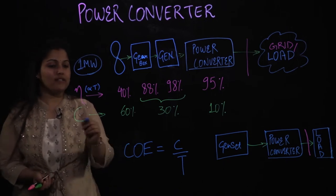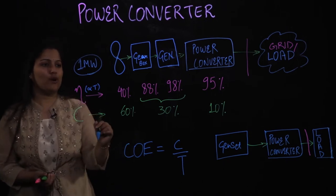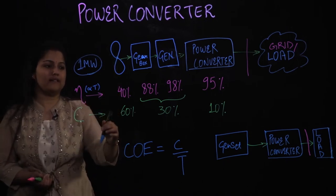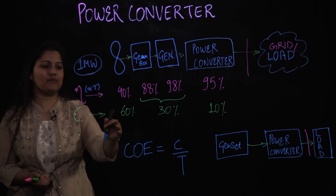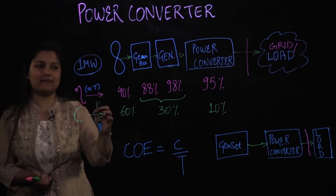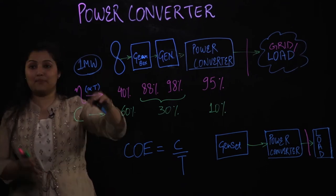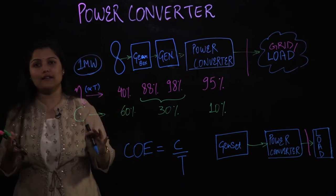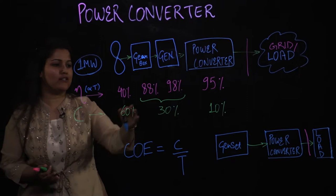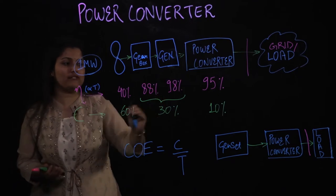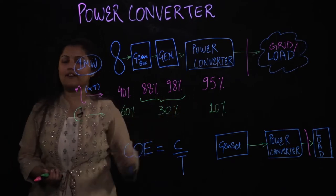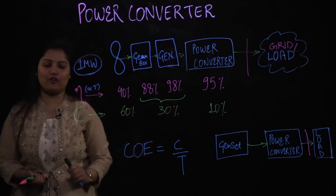The cost corresponding for the blades and tower is something like 60% — it's a huge cost — compared to the balance of system which is about 30%, and the power converter is roughly 10% of the cost.